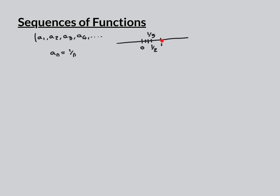Here's the first term, which is 1. Here's the second term, which is a half. Here's the third term, which is a third. Here's the fourth term, which is a quarter. And it goes on — a fifth, a sixth, a seventh, an eighth — on and on forever: this infinite sequence of points in the real line.